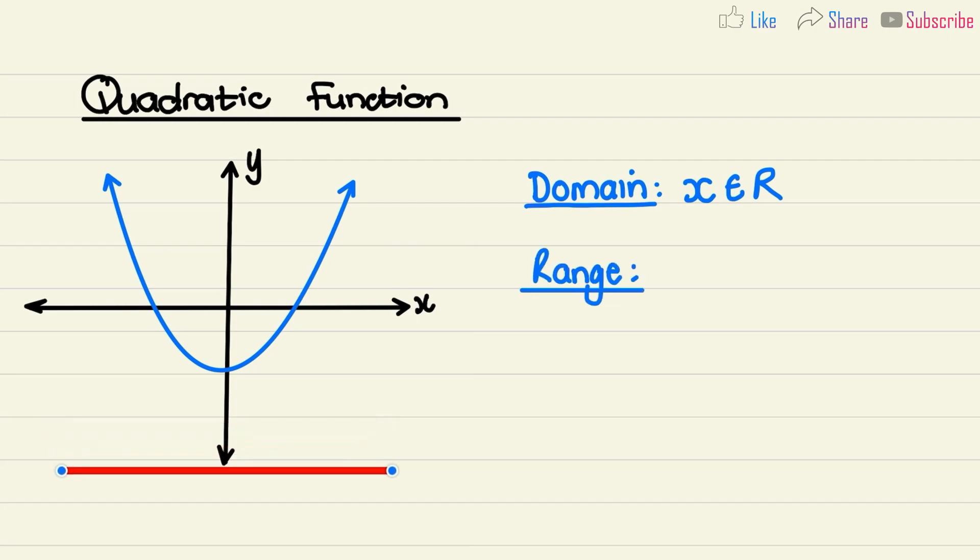Now the range for this graph is slightly different. If I start at negative infinity for y and I move up, I see that this red line is never crossing the quadratic function. And the first time that it touches the quadratic function is here at the lowest point of x, the minimum value or the turning point of the function.